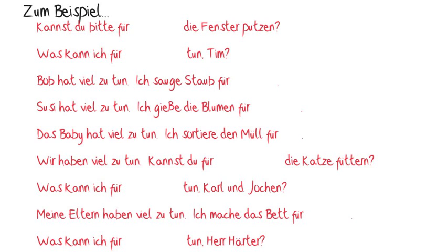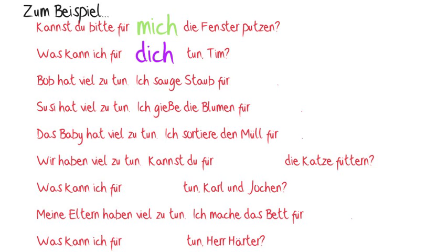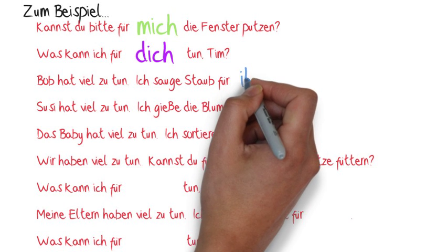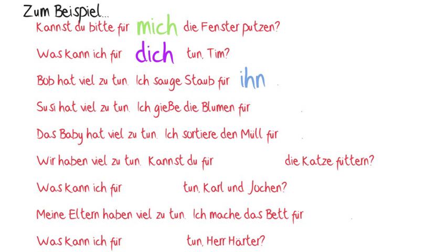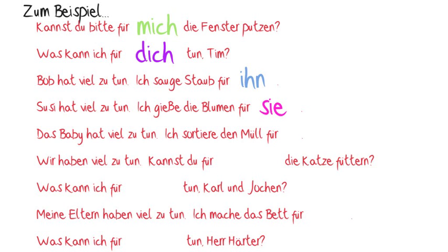In the first blank, one person is asking for help: 'Can you please clean the windows for me?' So our answer should be MICH. In the second one, we are addressing one person informally. But instead of DU, we need DICH, since our pronoun has to be in the accusative case. The same goes for the third one — 'Bob' would be replaced by 'er' in some instances, but because of the word FÜR, we need to use the accusative form of the masculine pronoun, so here it will be IHN. Feminine and neuter nouns keep their pronouns in the accusative case, so we'll have 'sie' and then 'es' in the next two sentences.